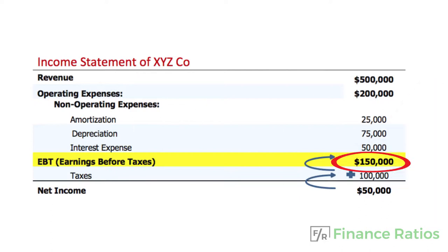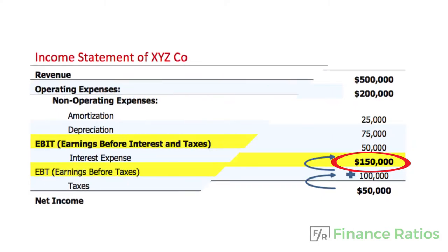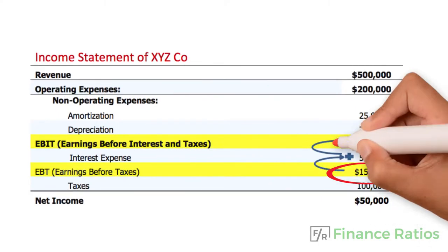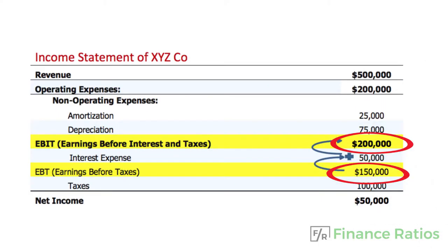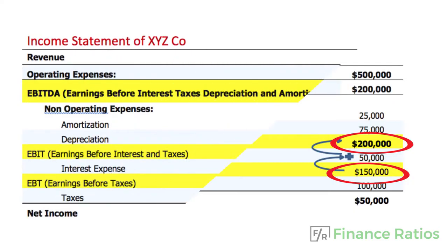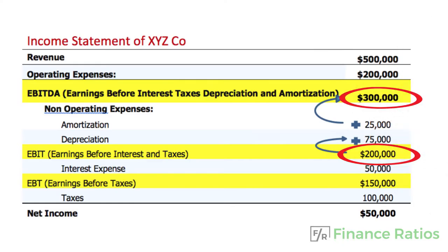At first, let's add back taxes, and we get EBT — earnings before taxes. Next, let's add back interest expense. We get EBIT — earnings before interest and taxes. And finally, let's add back depreciation and amortization, and we get EBITDA.